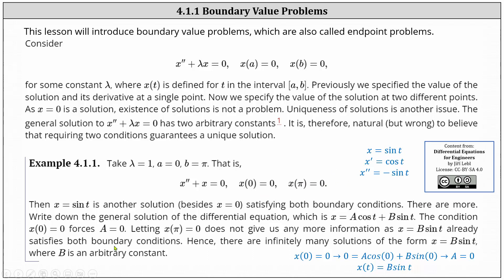However, there are more solutions. The general solution for the differential equation is x equals a cosine t plus b sine t. The initial condition x of zero equals zero forces a equal to zero. We have a cosine zero plus b sine zero equals zero, and since sine zero is zero and cosine zero is one, a must be zero, giving us x of t equals b sine t. Letting x of pi equals zero does not give us any additional information, as x equals b sine t already satisfies both boundary conditions. Hence, there are infinitely many solutions of the form x equals b sine t, where b is an arbitrary constant.